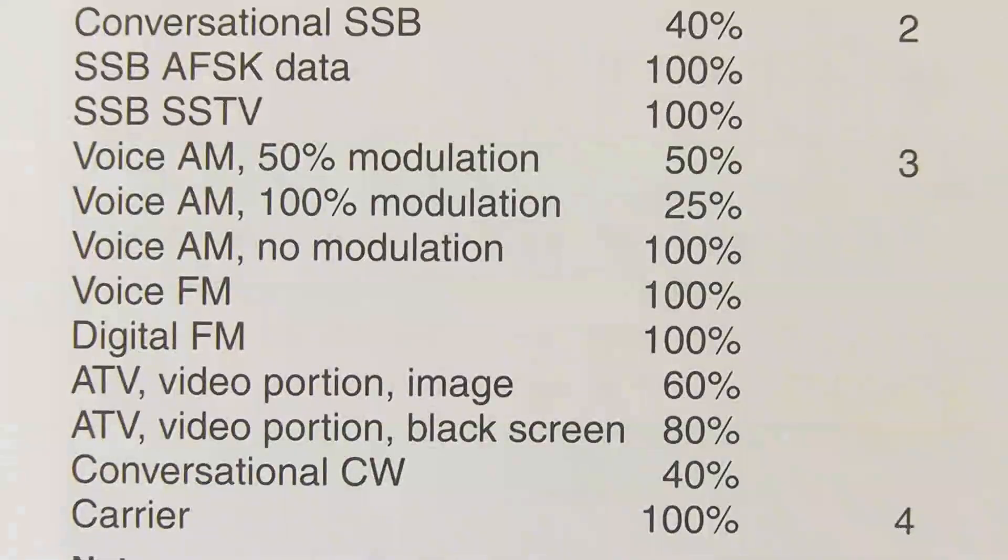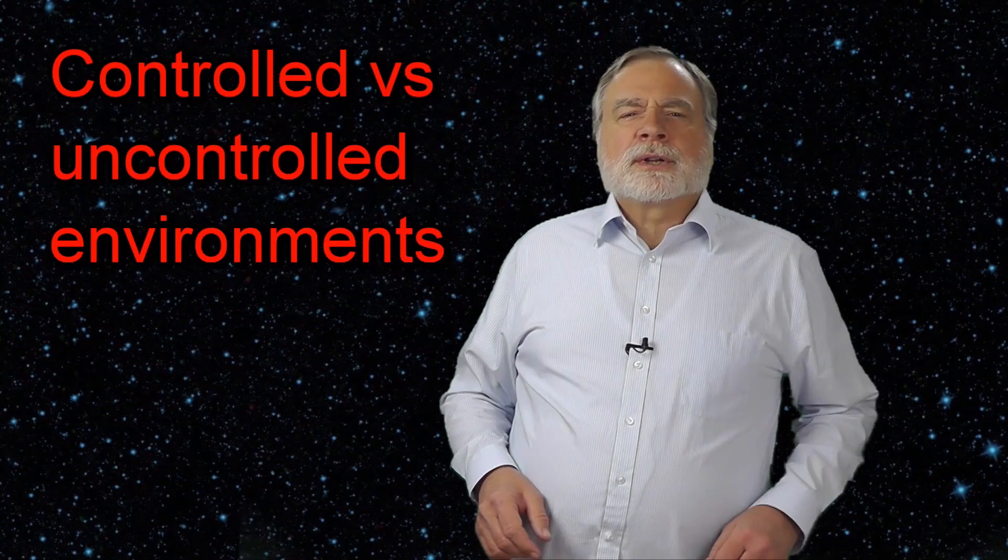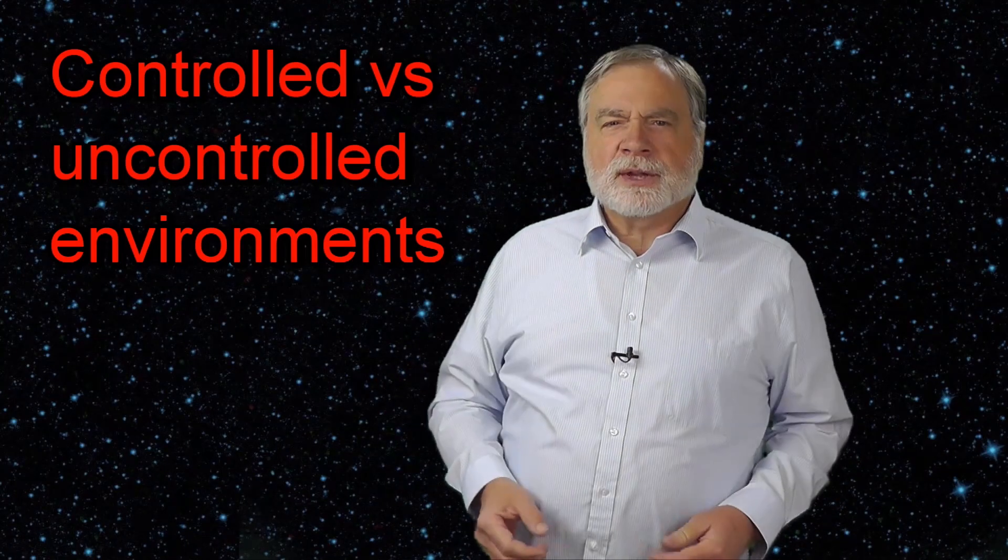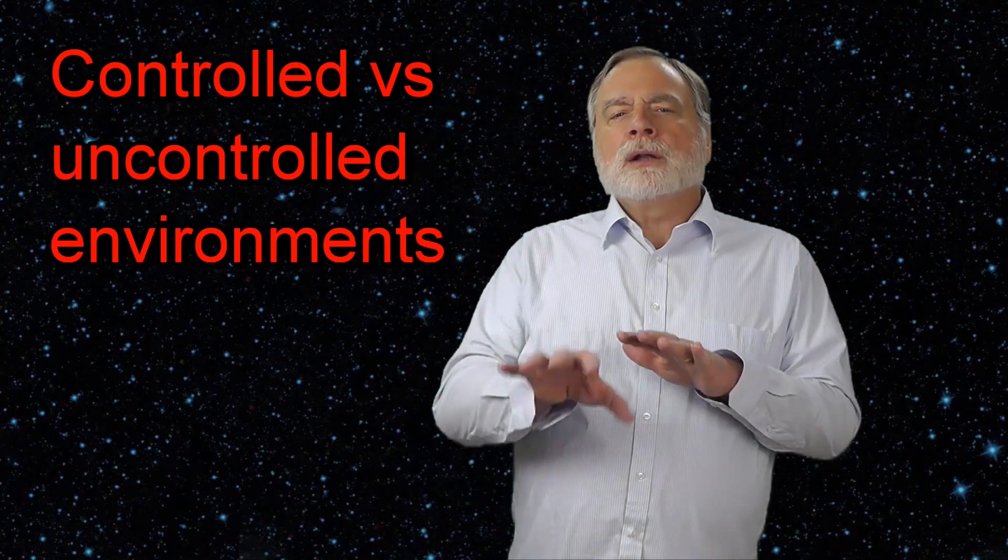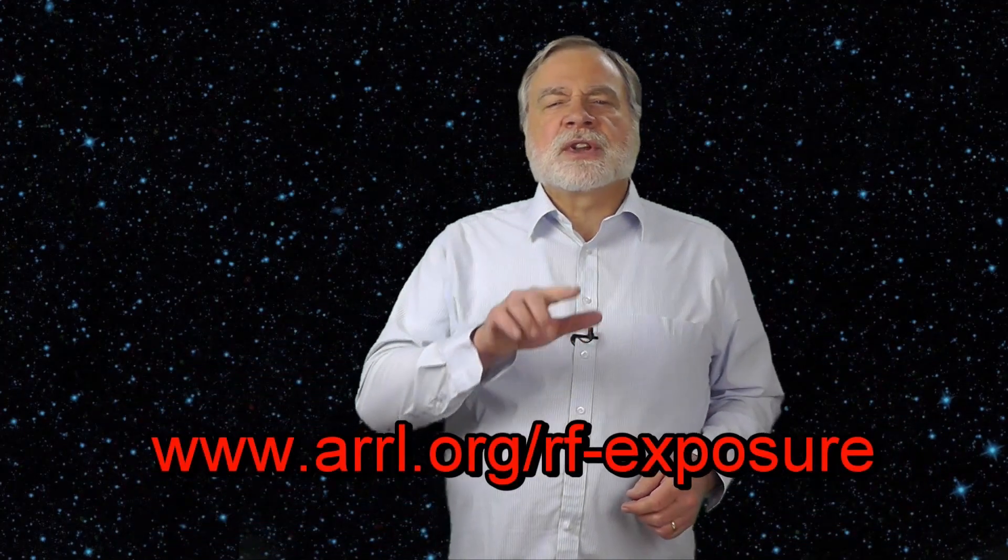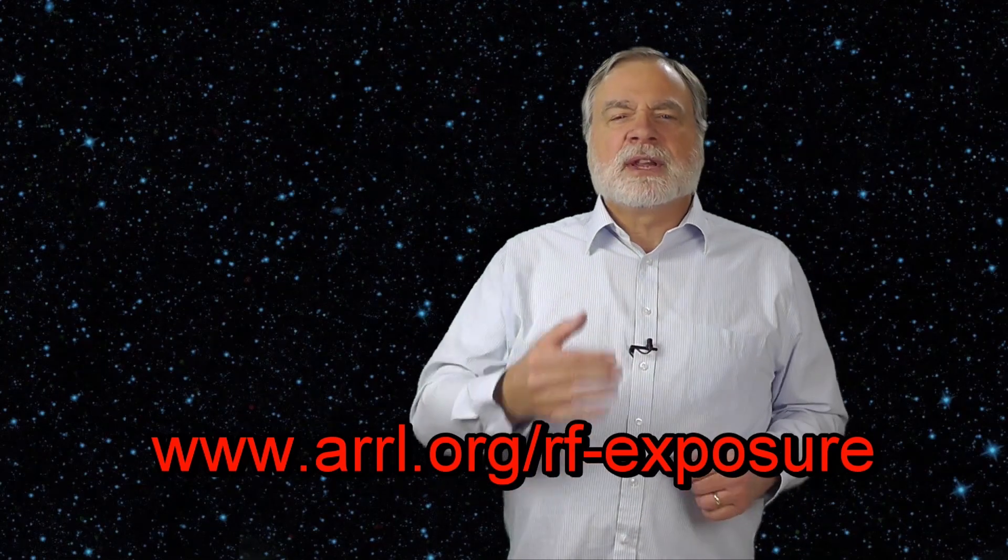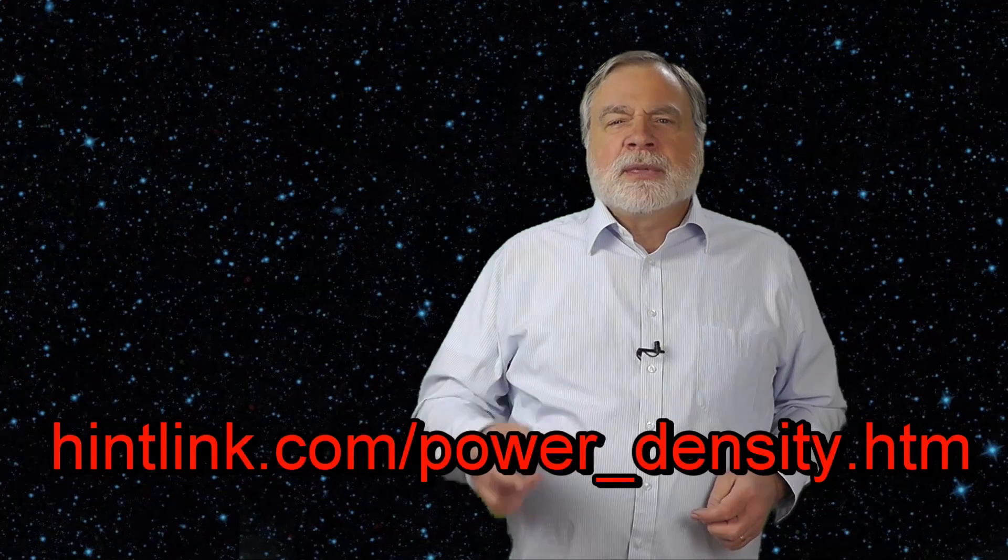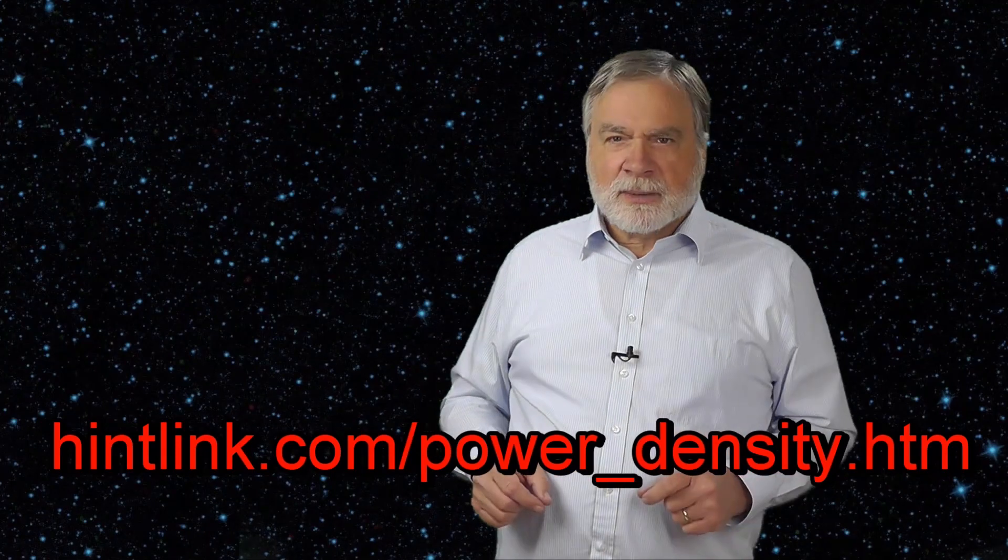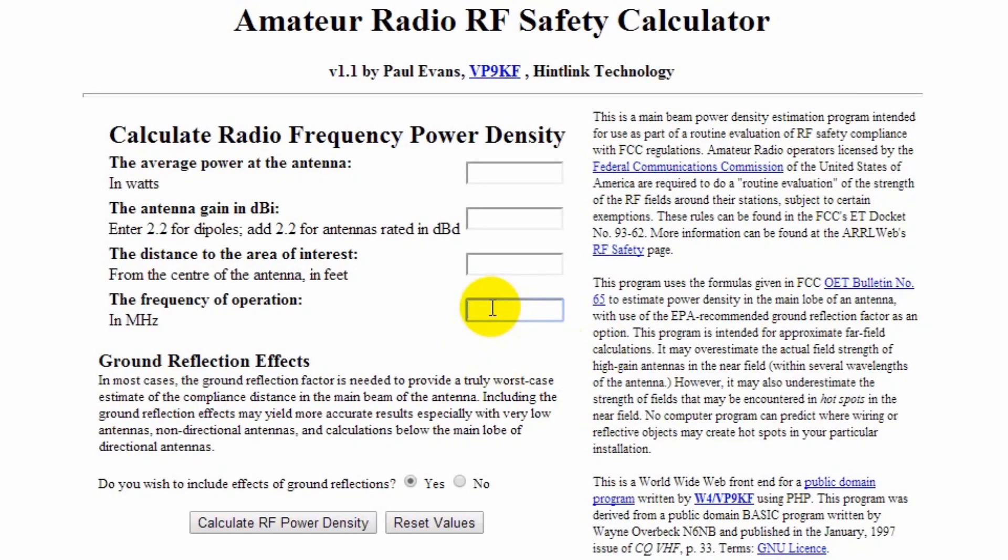The book does a good job describing controlled environments, meaning people in the environment know about the hazard and take ordinary precautions, and uncontrolled environments where people exposed have no idea they're being exposed. Let's go through several examples. The book mentions an ARRL website with many documents that describe RF exposure limits in great detail. It lists an online calculator, which can be found at hintlink.com/power_density.htm. Let's take a look at an average HF 100-watt station using single sideband on 10 meters or 28 megahertz.